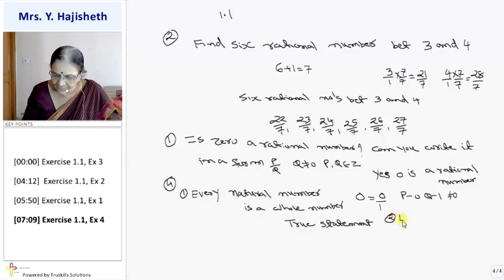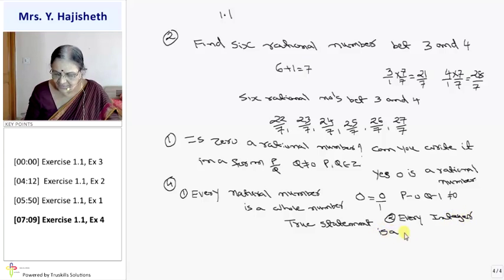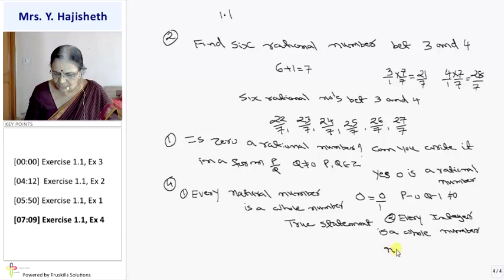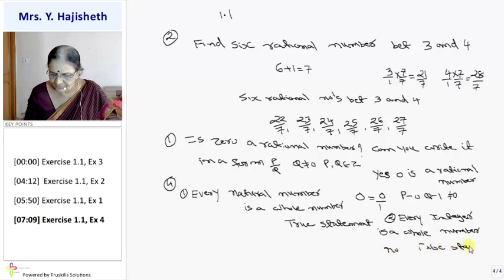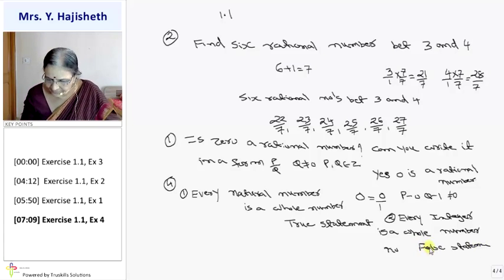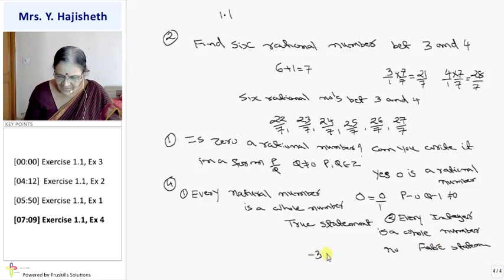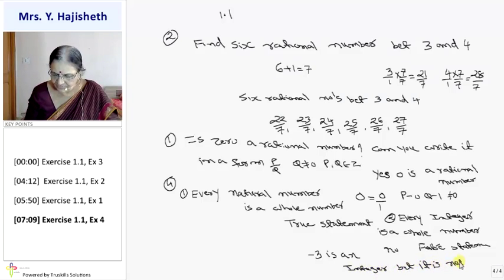Second statement: every integer is a whole number. No, it is a false statement. Why? Because minus 3 is an integer but it is not a whole number.